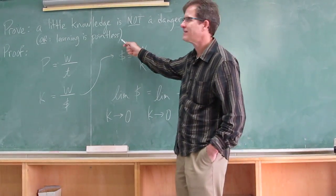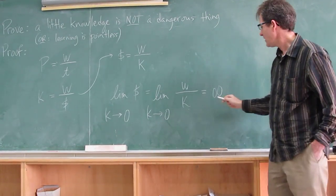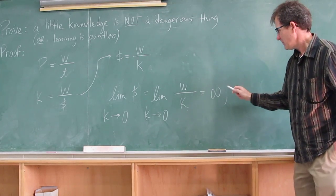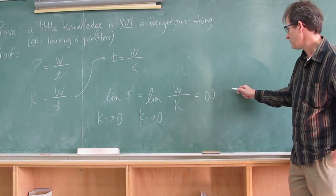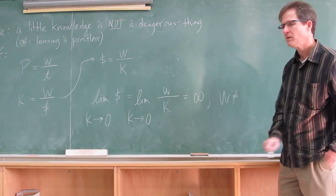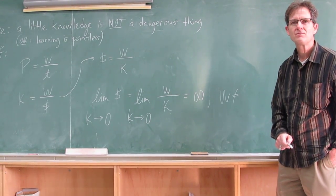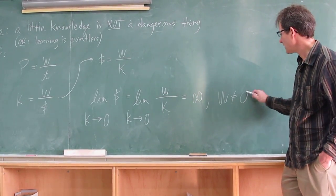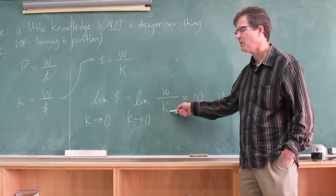So learning is pointless. A little knowledge is not a dangerous thing. But there's one criteria or exemption or restriction here. The work cannot equal zero because if it's equal to zero, you get zero over zero, which is?